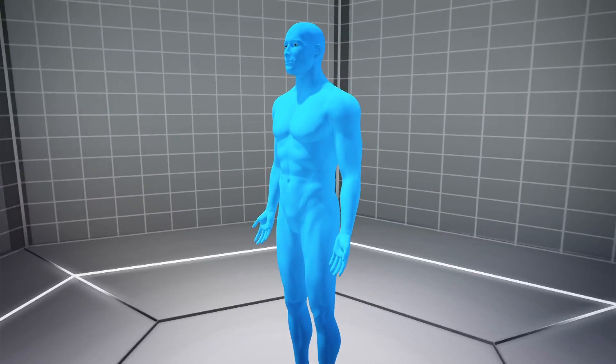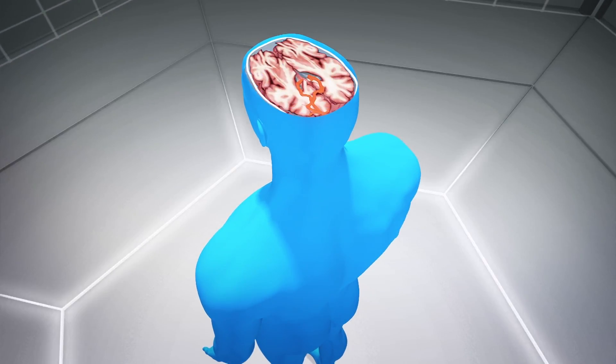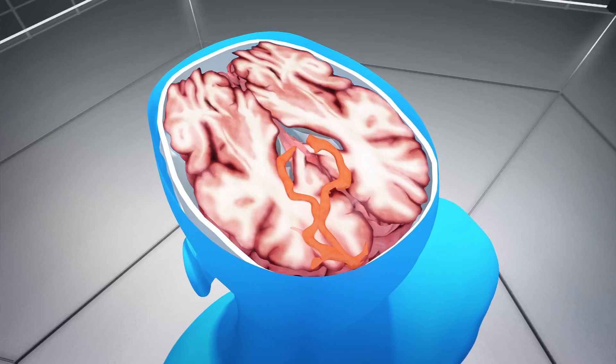Glioblastomas are highly malignant and reproduce rapidly and are supported by a large network of blood vessels. They are usually found in the cerebral hemispheres of the brain but can appear anywhere in the brain or spinal cord.